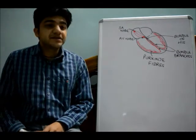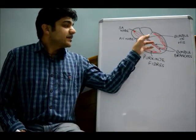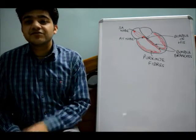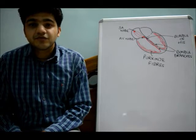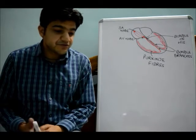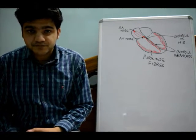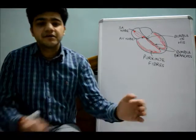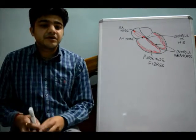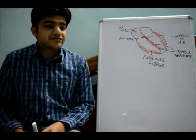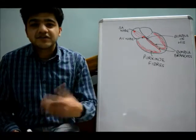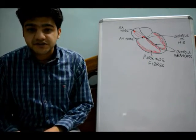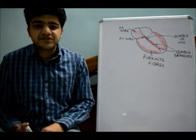In some cases the AV node does not conduct all the impulses into the ventricles, leading to a situation called a heart block. These bradyarrhythmias are treated by drugs which increase SA nodal automaticity or AV nodal conduction, which I will be discussing later.